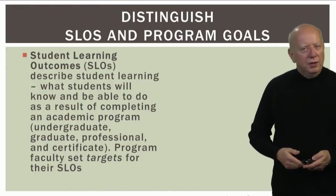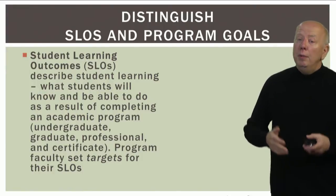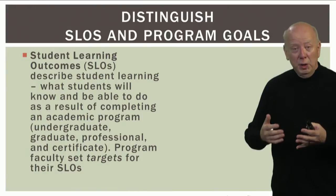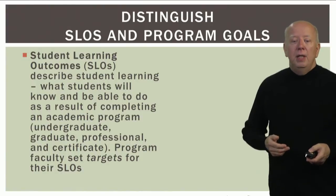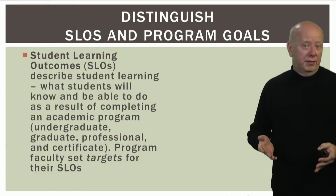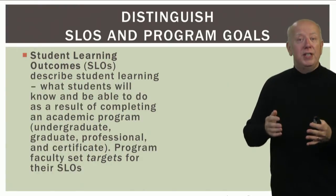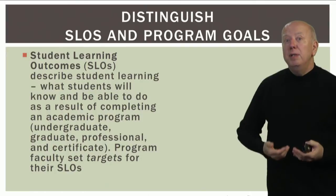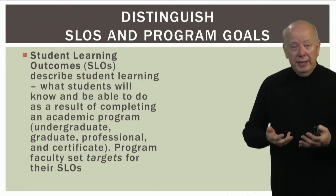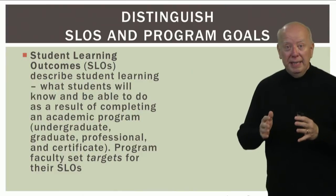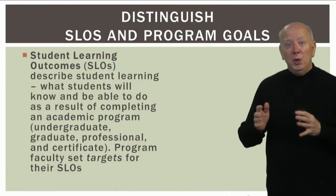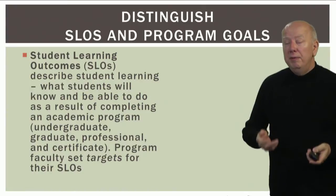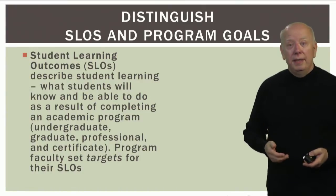Let's distinguish student learning outcomes from program goals. Student learning outcomes describe what we expect students to have learned — what they know and are able to do at the end of an academic program. Program faculty also set targets for their SLOs — a percentage of students considered appropriate to have met the outcome for the program to be successful. The University Academic Assessment Committee has set the minimum limit at 70%. If your program's target is less than 70%, you need to provide a rationale in Compliance Assist.